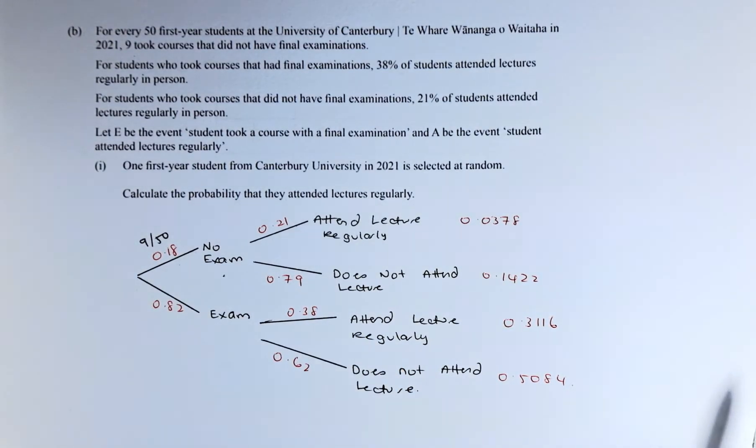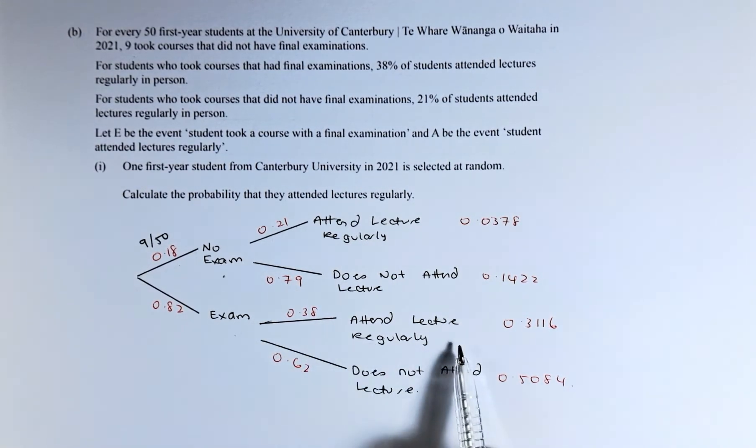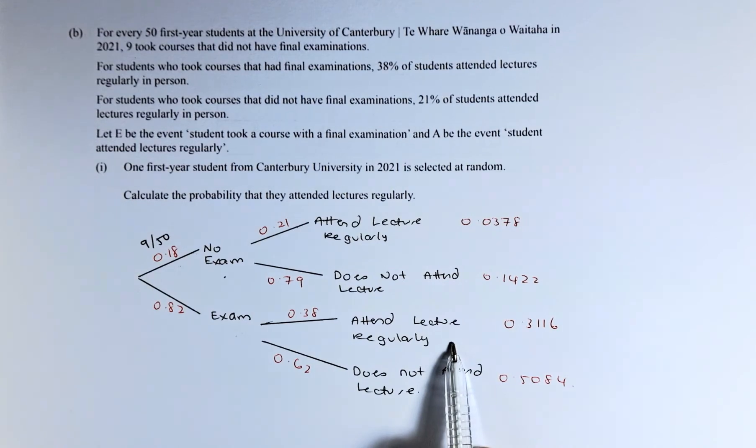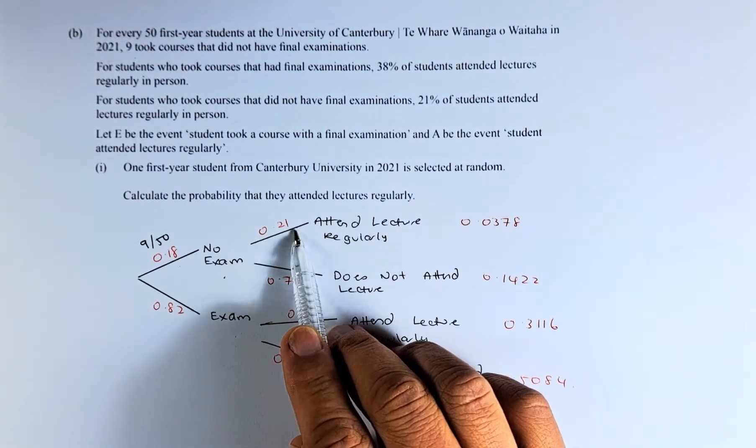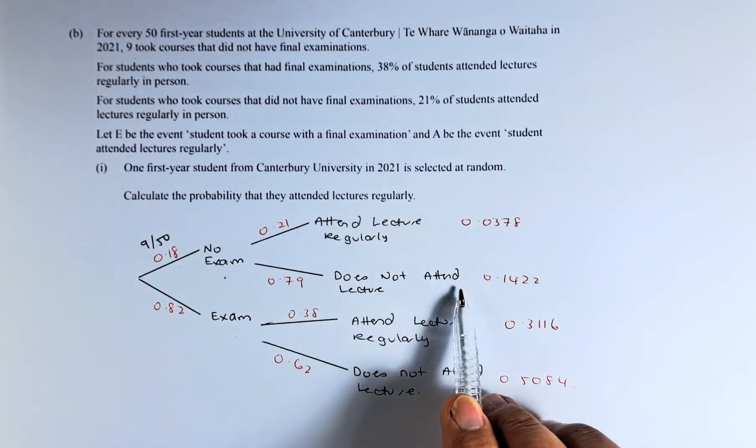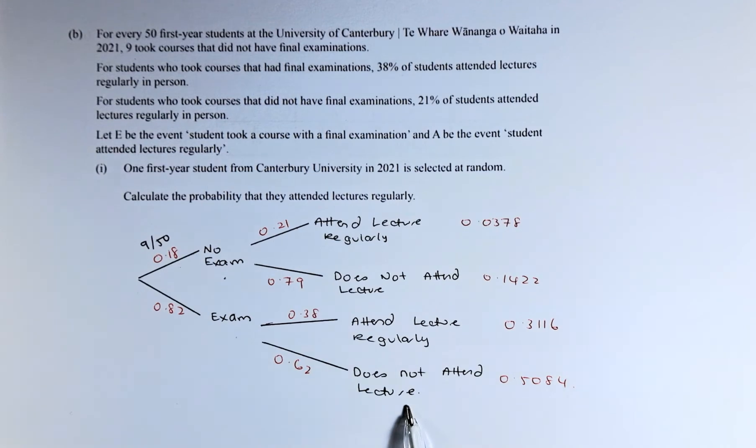For students who took the courses with exam, 38% attended lectures regularly, so 0.38 attend lectures regularly. For students who took courses that do not have final exam, 21% attended regularly, so that's 0.21. These two must add up to 1, so that must be 0.79 for those who do not attend lecture, and 0.38 means this must be 0.62, does not attend lecture regularly.